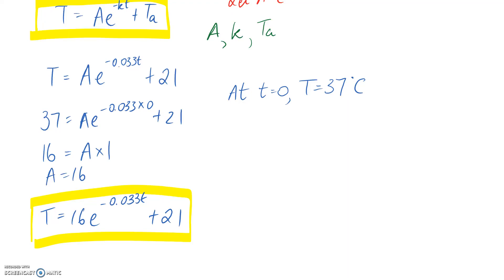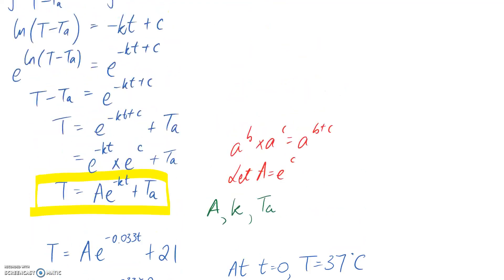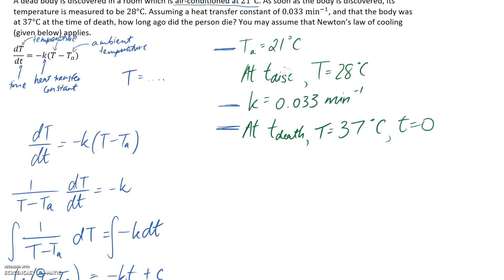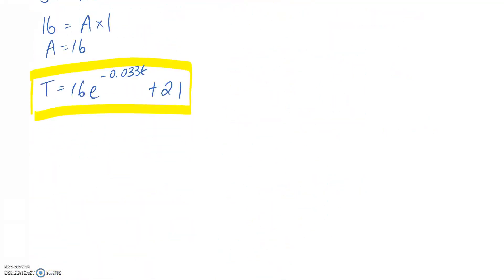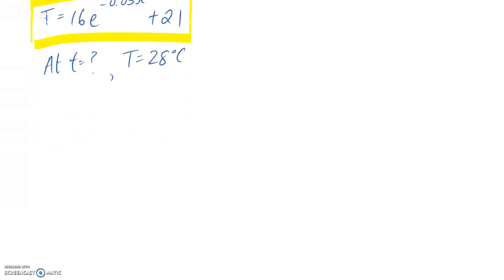The time that I'm specifically interested in is when I have a temperature of 28 degrees, because that's my time of discovery. So if I solve for when T is equal to 28 degrees, I'm going to get the answer to my question, which is how long ago did the person die? So at T equals what? Capital T equals 28. Popping it in, we get this.